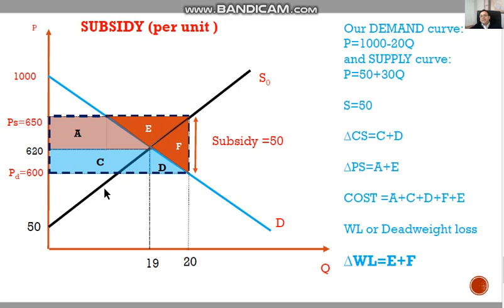Because government is giving 50 Turkish lira for each unit consumed, we move from here to there, where consumption increased to 20. Students watching this video, try to figure out how I found this 20 and 650. It's homework.